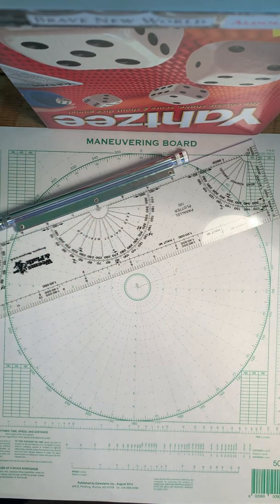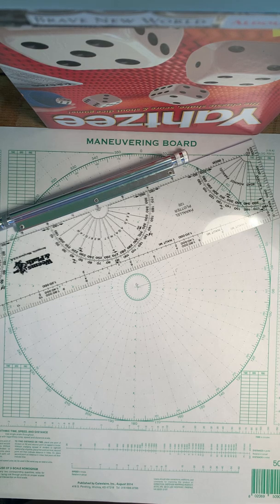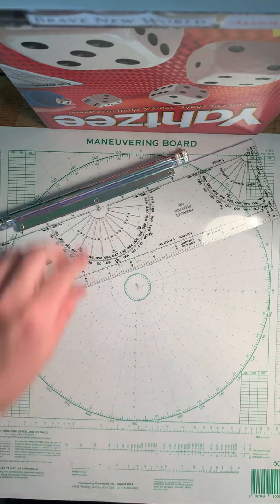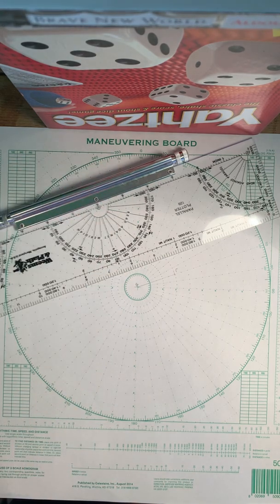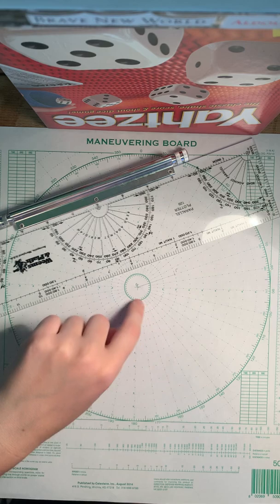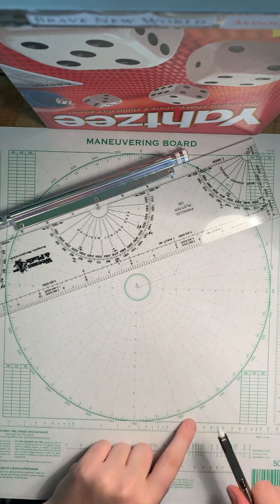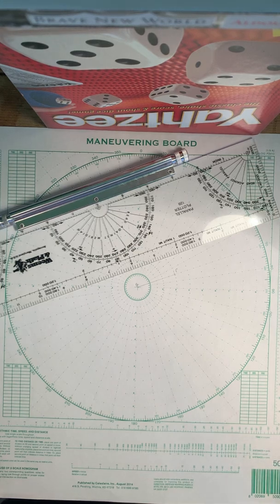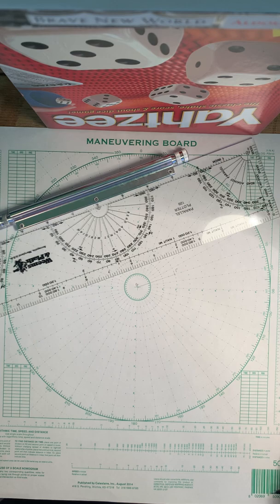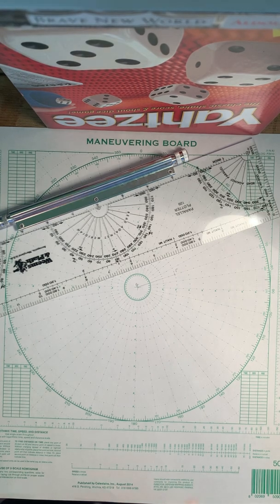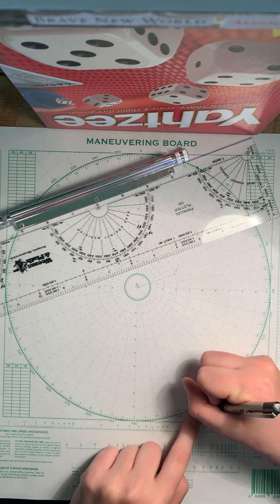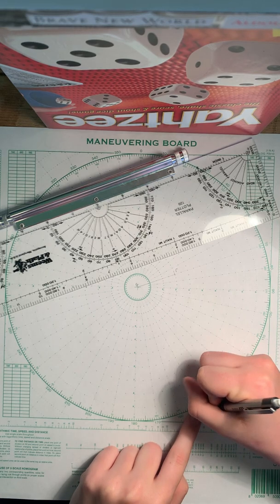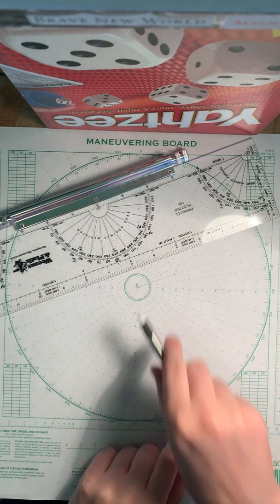Then, the next part of the question says, apparent wind is 150 true or 80 degrees relative at 20 knots. So that means that the wind from where you are is blowing in from 150 true or 80 degrees relative. This question gives you both the true and relative bearing, but you're usually just going to get one. So if you're given that the apparent wind is 150 true, that's easy. You just go to 150 true and mark, draw an arrow coming in because you want to remember the wind is coming this way.